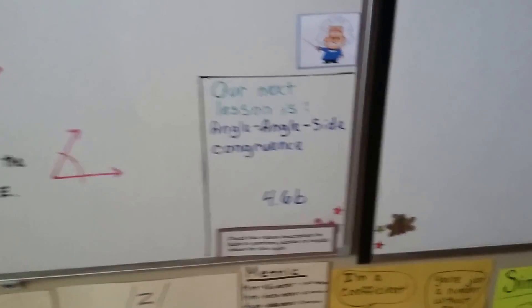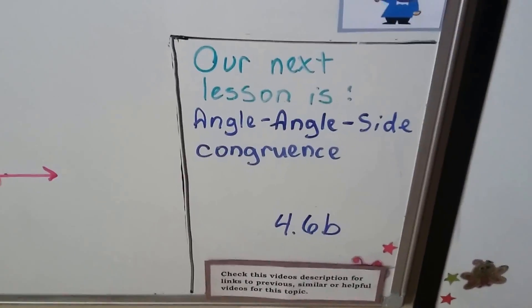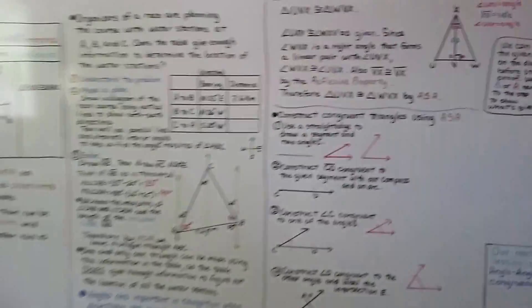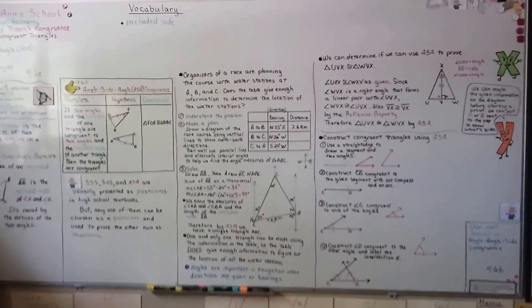Our next lesson is angle-angle-side congruence. That's going to be 4.6B. So hit the like button if this was helpful at all and keep trying, keep going, and I'll see you next time.